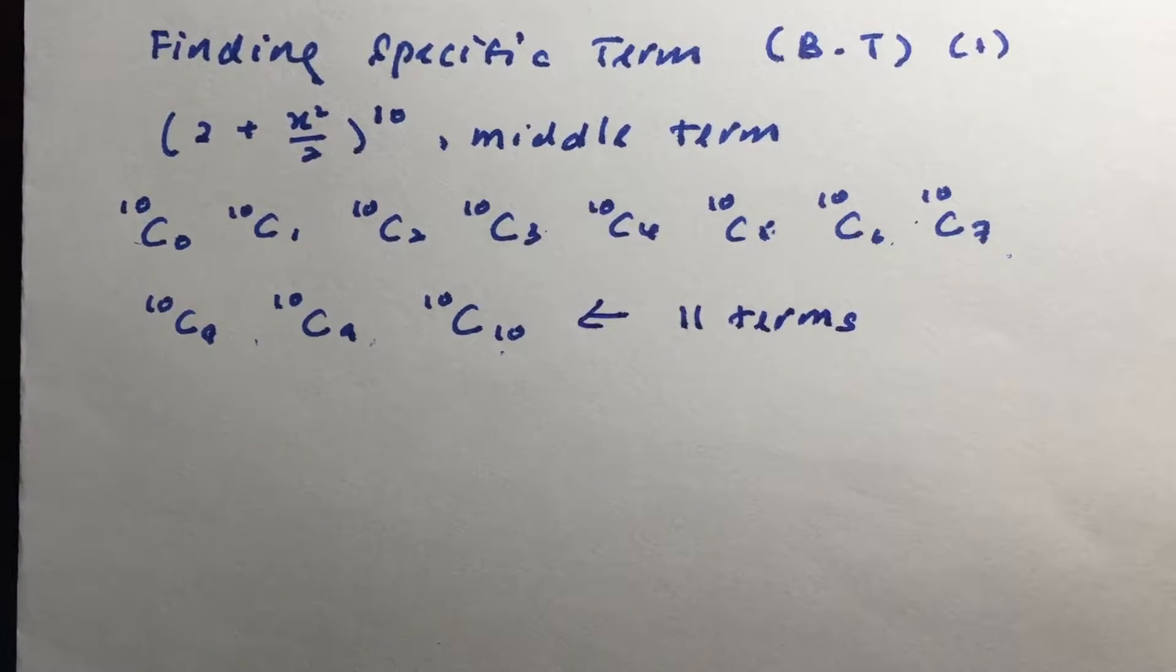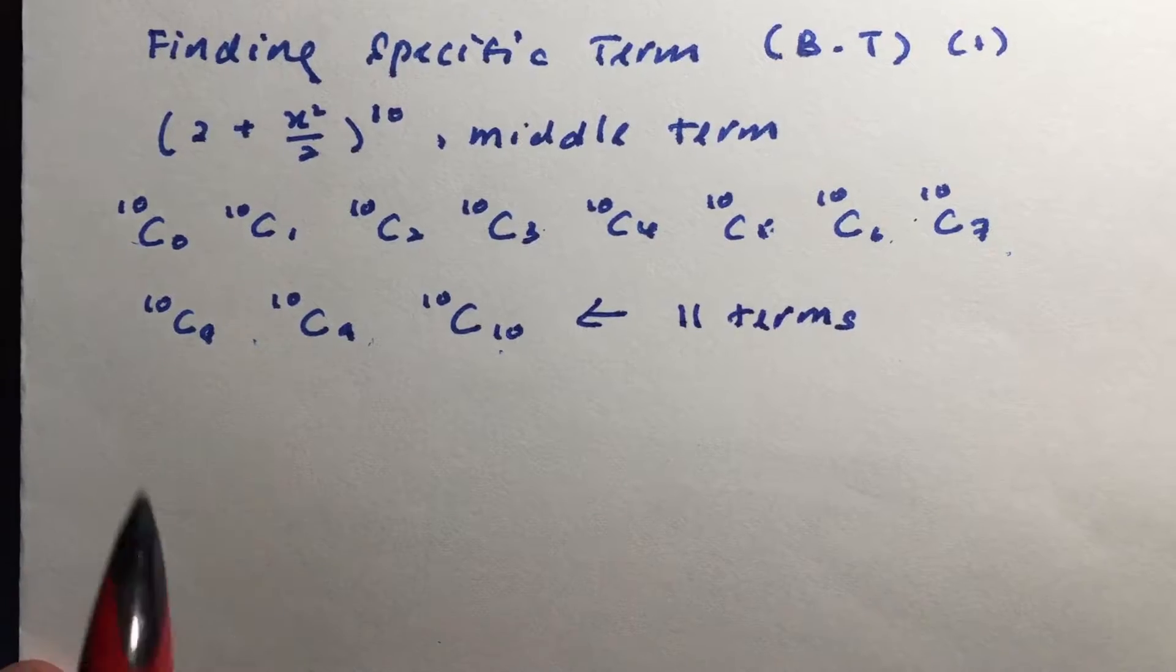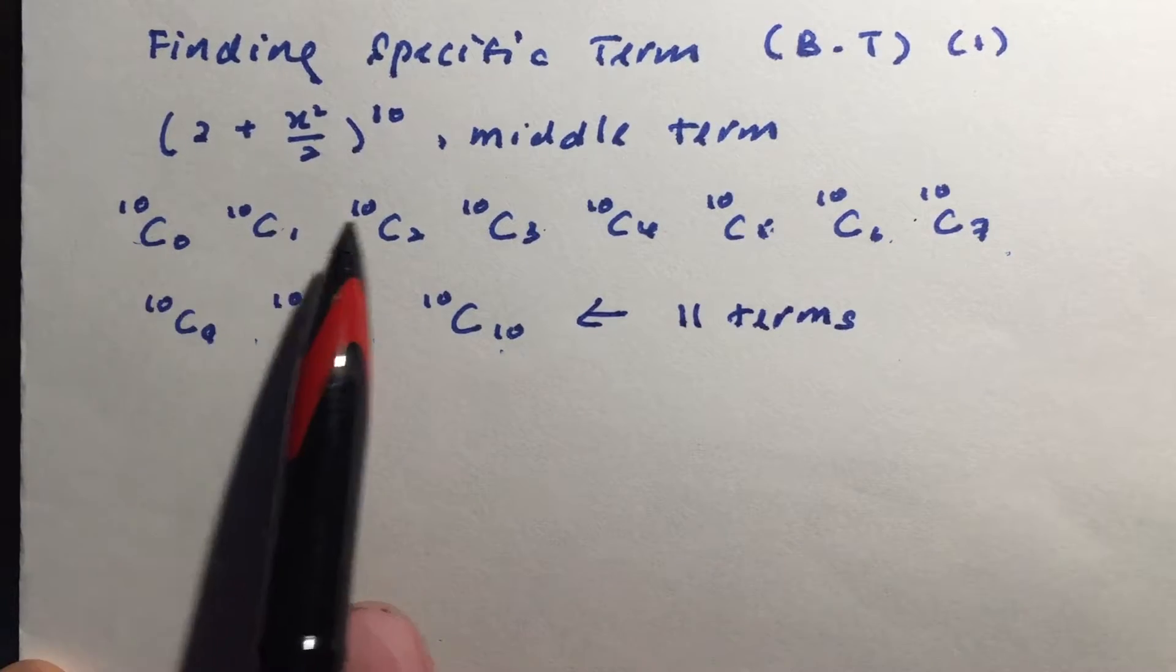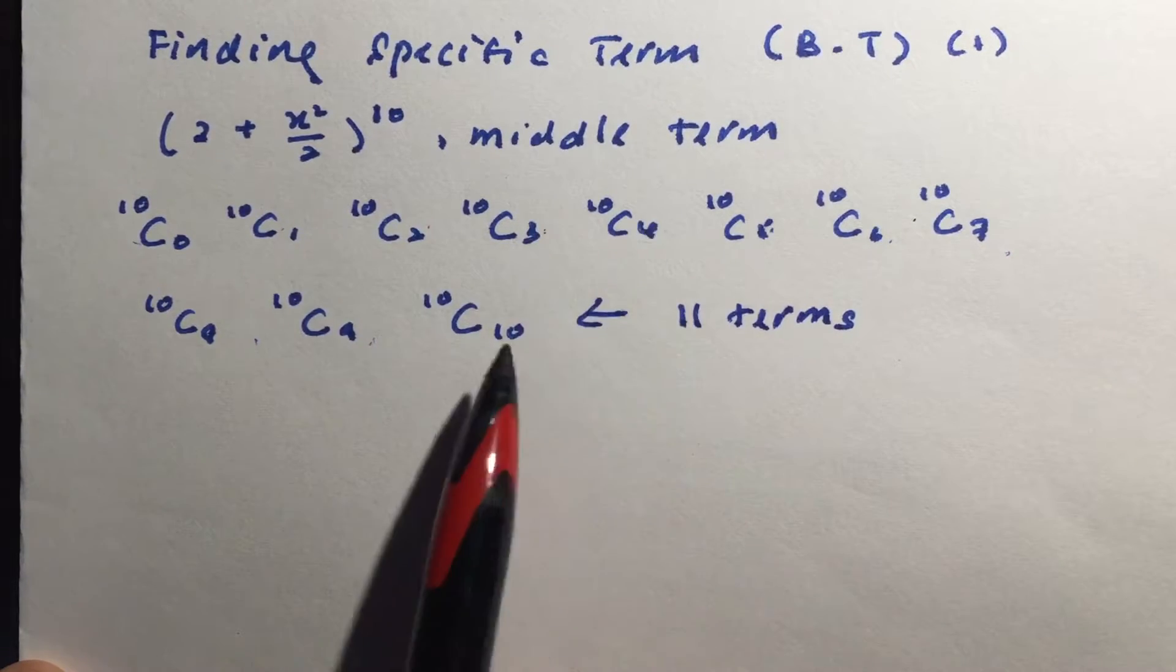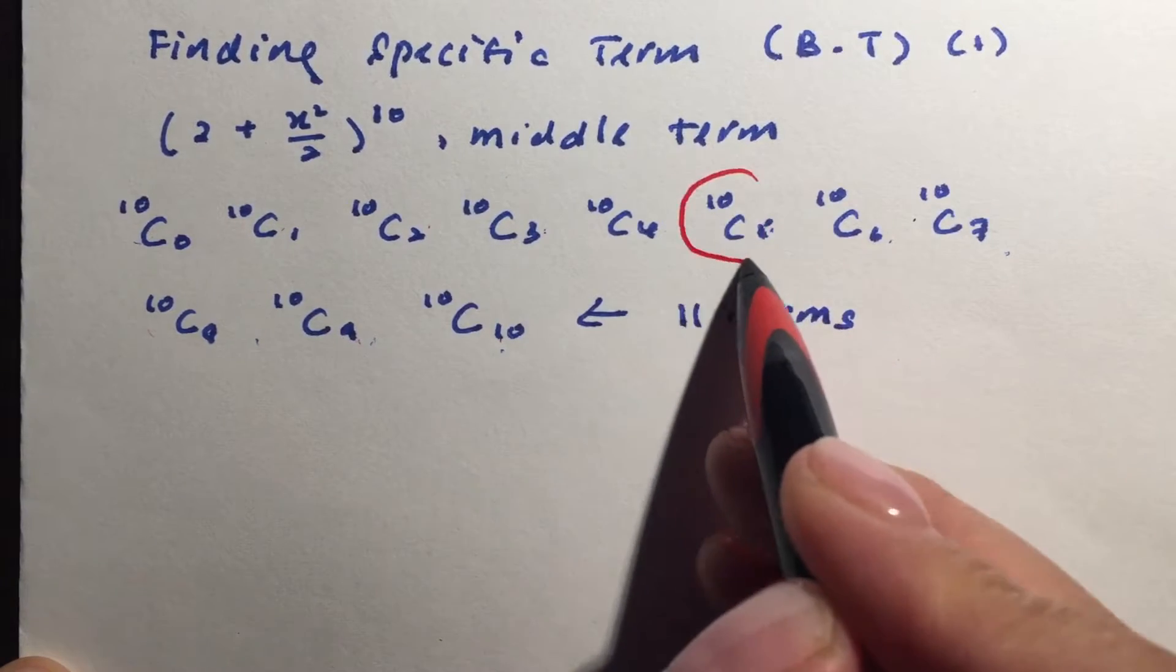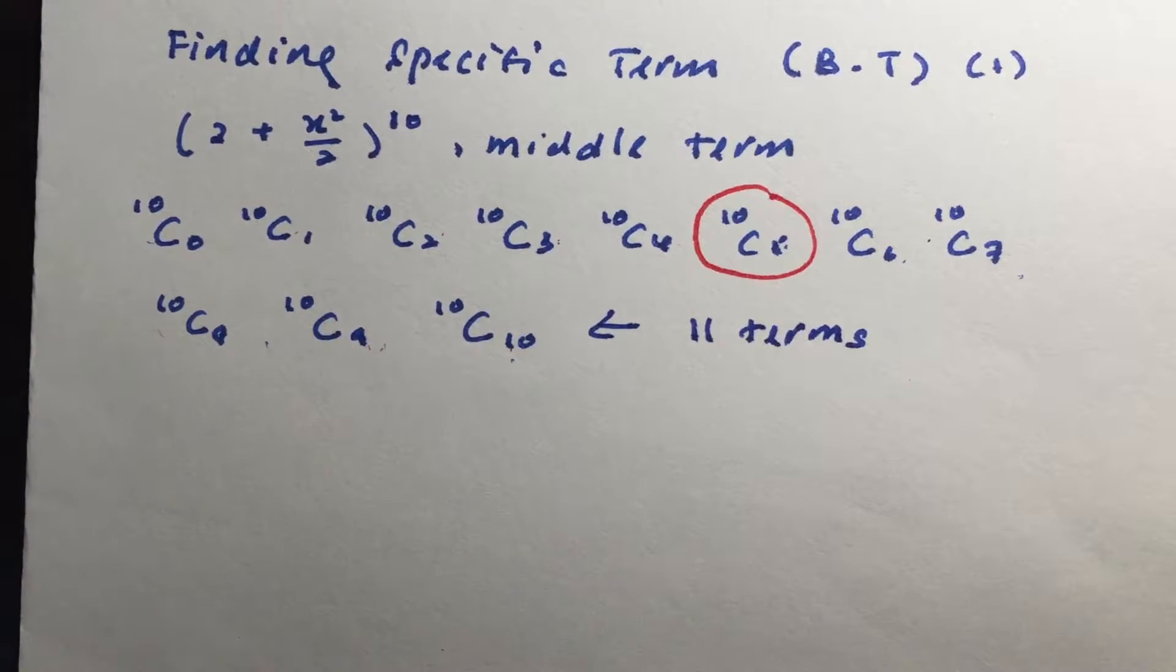And because there are 11 terms, it is possible to have a middle term. So we'll have 1, 2, 3, 4, 5, and 1, 2, 3, 4, 5. So this one is actually the middle term.